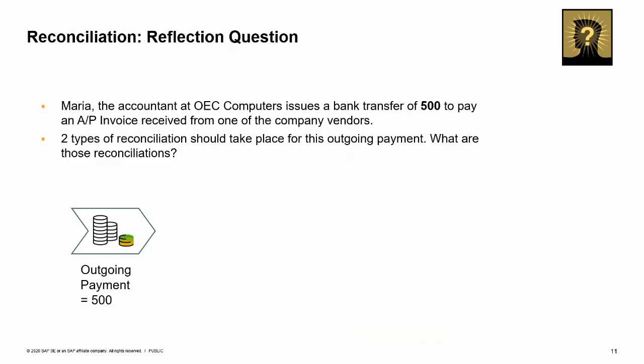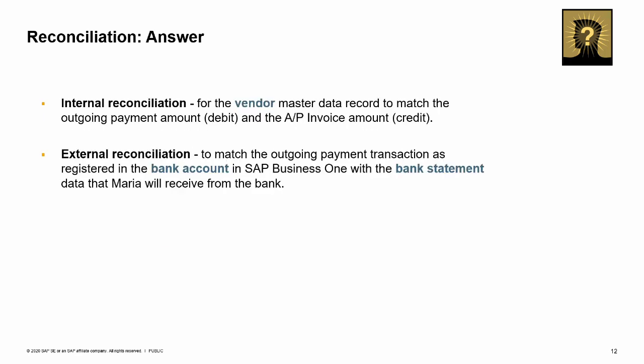Maria, the accountant at OEC Computers, issues a bank transfer of 500 to pay an AP invoice received from one of the company's vendors. Two types of reconciliation should take place for this outgoing payment: internal reconciliation for the vendor master data record to match the outgoing payment amount and the AP invoice amount; and external reconciliation to match the outgoing payment transaction as registered in the bank account in SAP Business One with the bank statement data that Maria will receive from the bank.